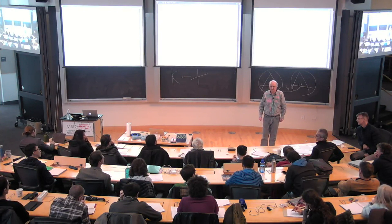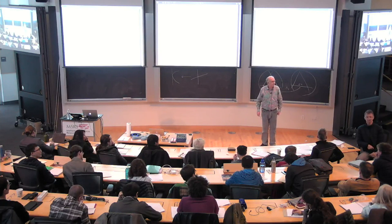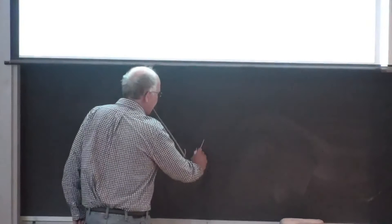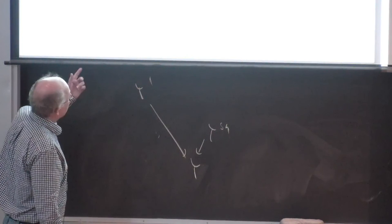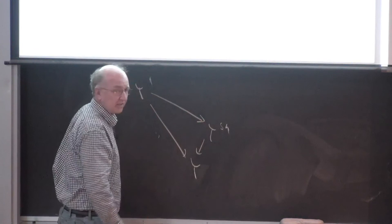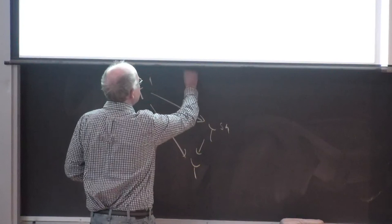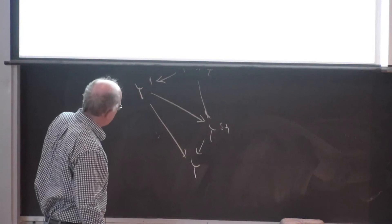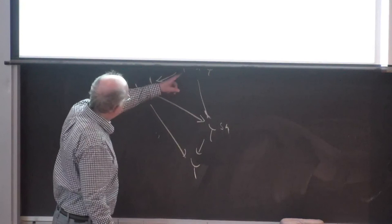Would it be fun to prove that last lemma? Here is Y' mapping to Y. Let's write down the semi-normalization of Y. The map factors through the semi-normalization: Y' to Y^sn. You have to prove this is a partial semi-normalization, but since Y' is semi-normal this is an isomorphism. That's the proof.